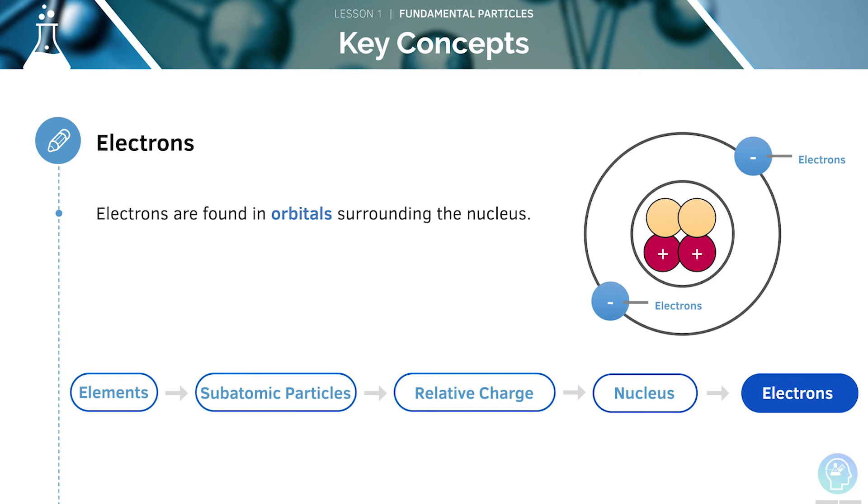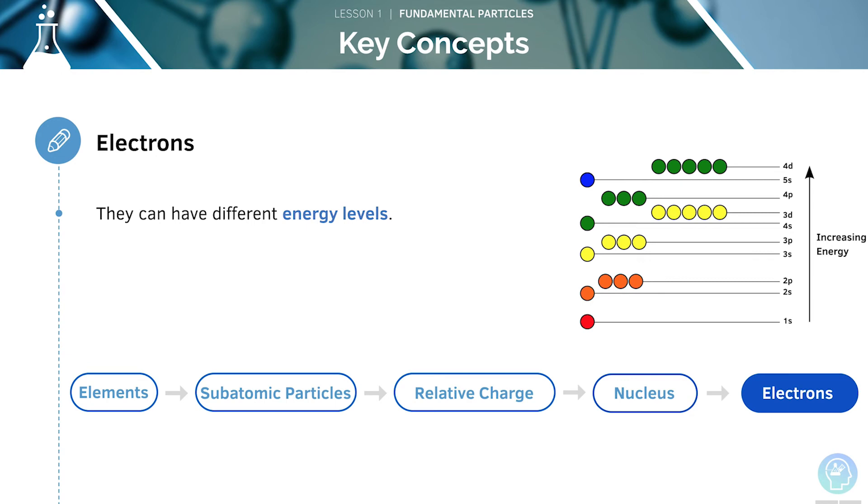Unlike protons and neutrons, electrons are found around the outside of the nucleus. We can say that they are found in orbitals surrounding it. Electrons can be found at different energy levels.